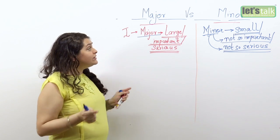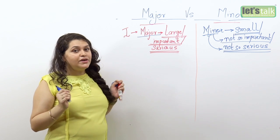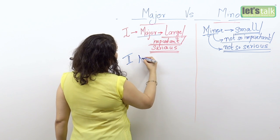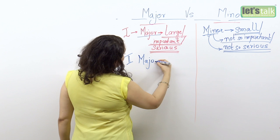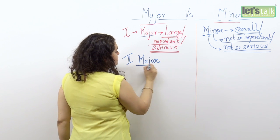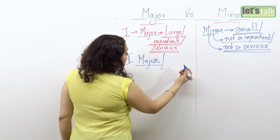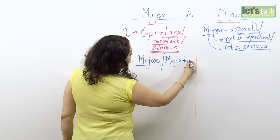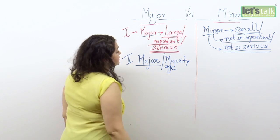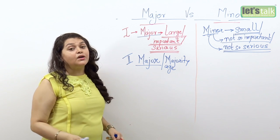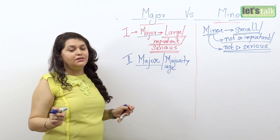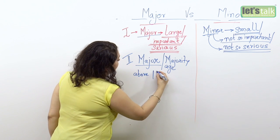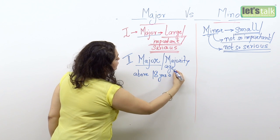But this is not the only way to use these words. Major and minor can also talk about age. So when I say that a person is a major or has reached majority age, it means, in most countries according to the legal and civil definition, that the person is above 18 years of age.